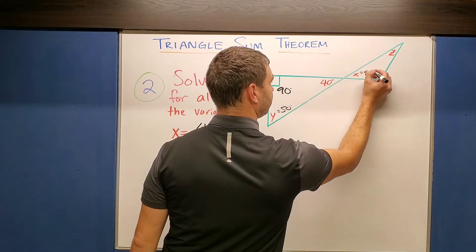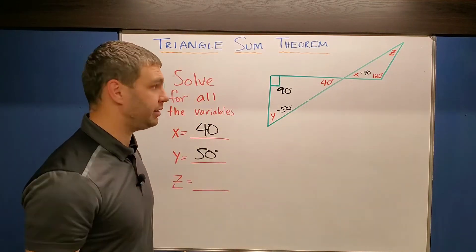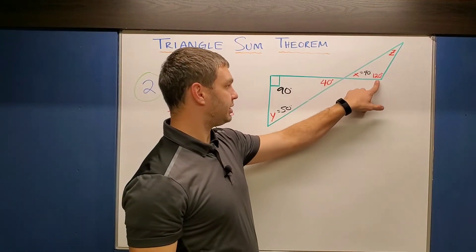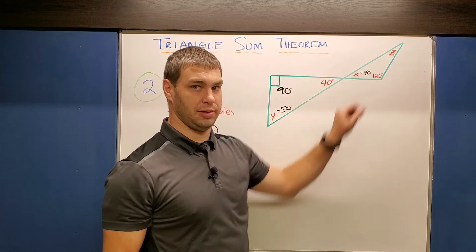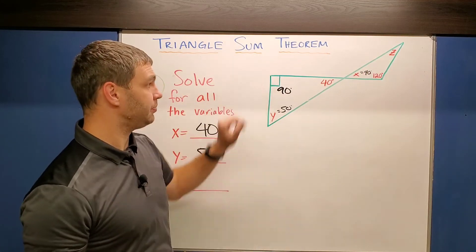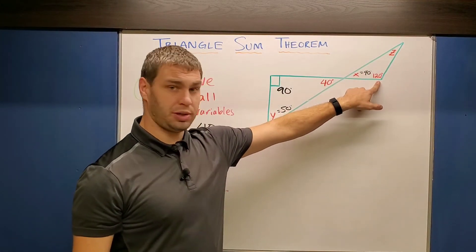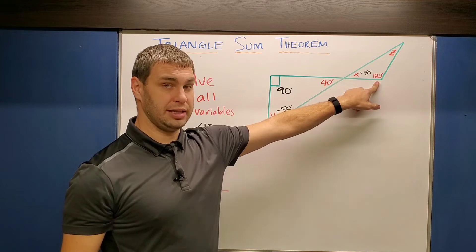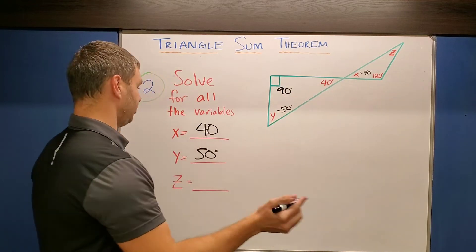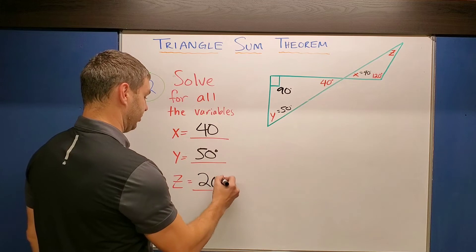Again, put that in your picture because you might need that later. And in fact, we do need it right now. 40 plus 120 plus Z has to equal 180 since that's the triangle sum theorem. And 40 right now plus 120 is 160 degrees. That means I need 20 more degrees to get me to 180, so Z is 20 degrees.